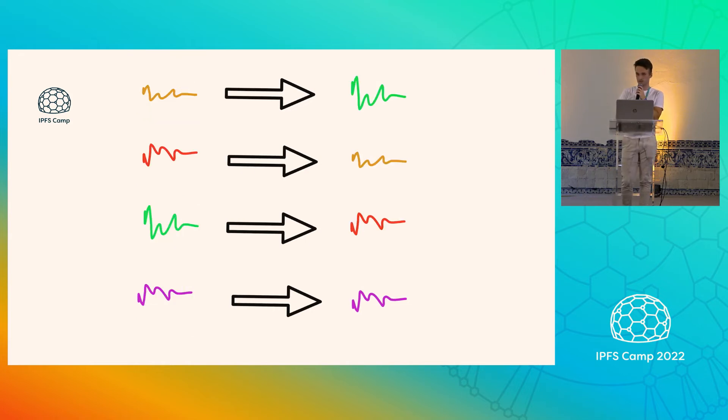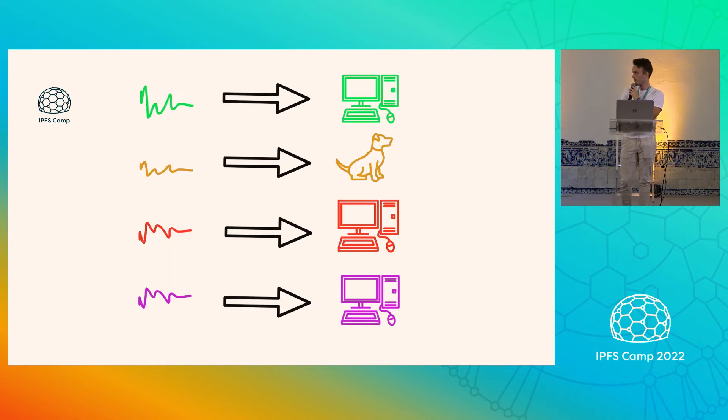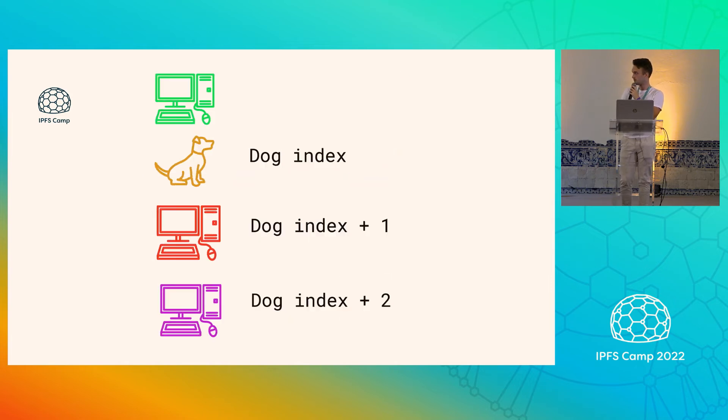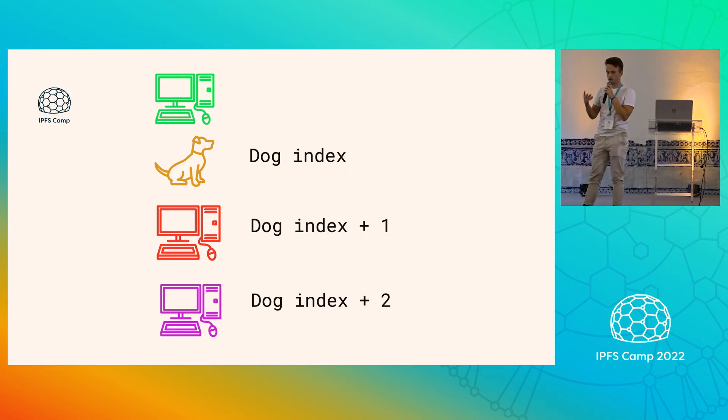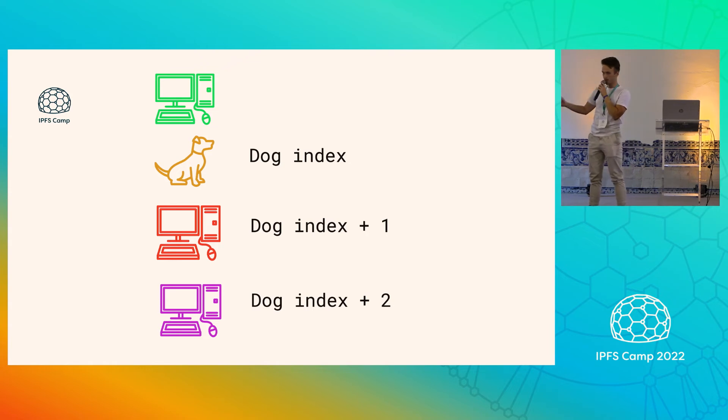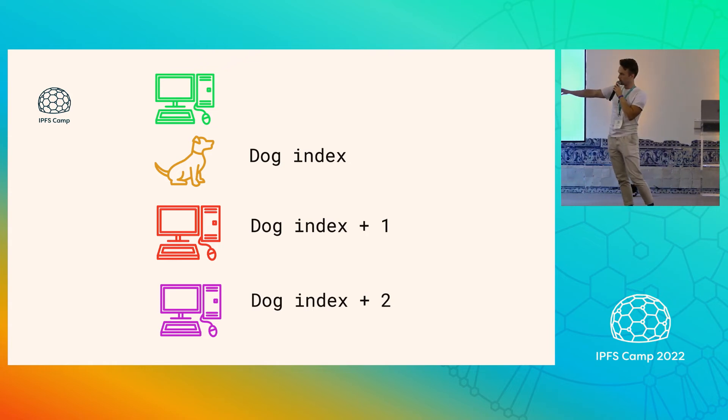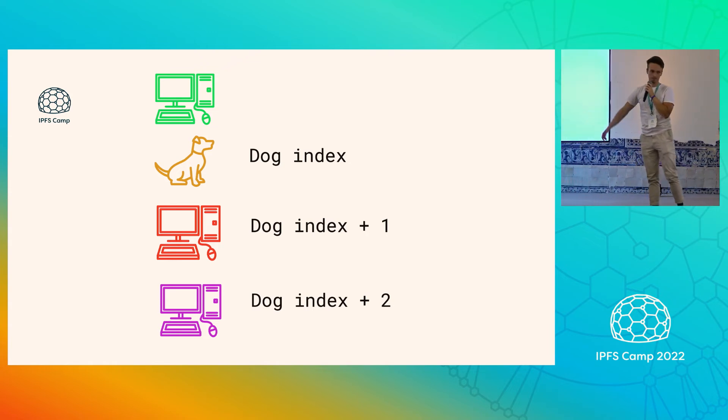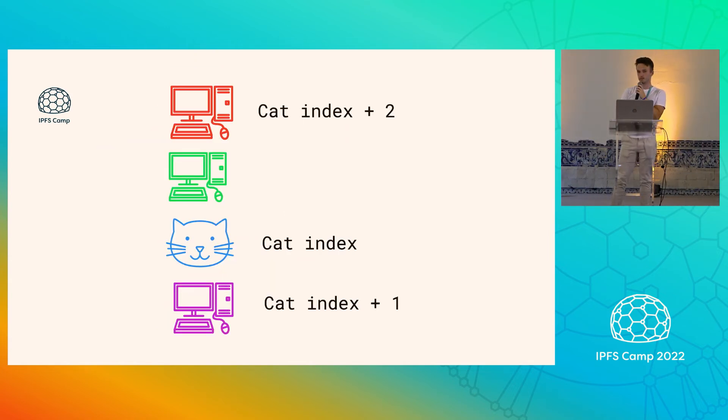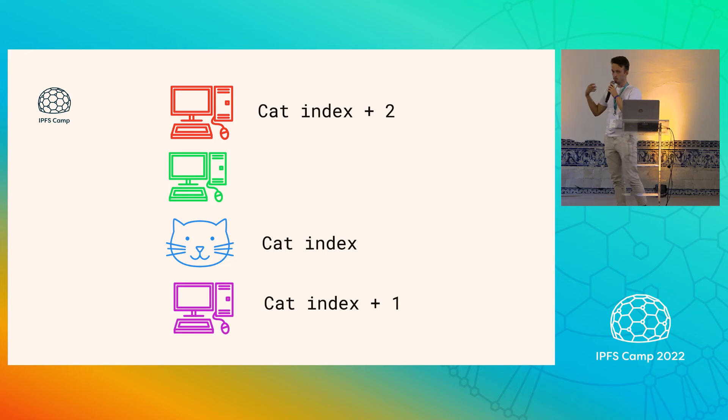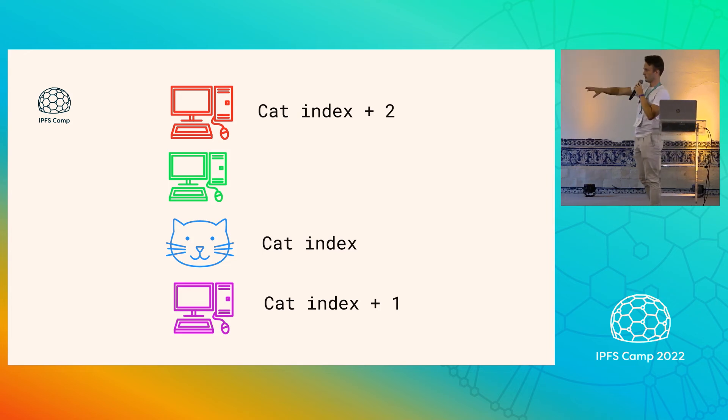We sort the hashes in some deterministic way. Then we take the things back from the hashes. Then we choose the replicators as the adjacent indices to the dogs where they end up in the sorted list. So in a world where we want two computers to store and replicate this dog, you would choose the two adjacent indices. And since this hash function is based on the content, it will be unique depending on what you're going to store.